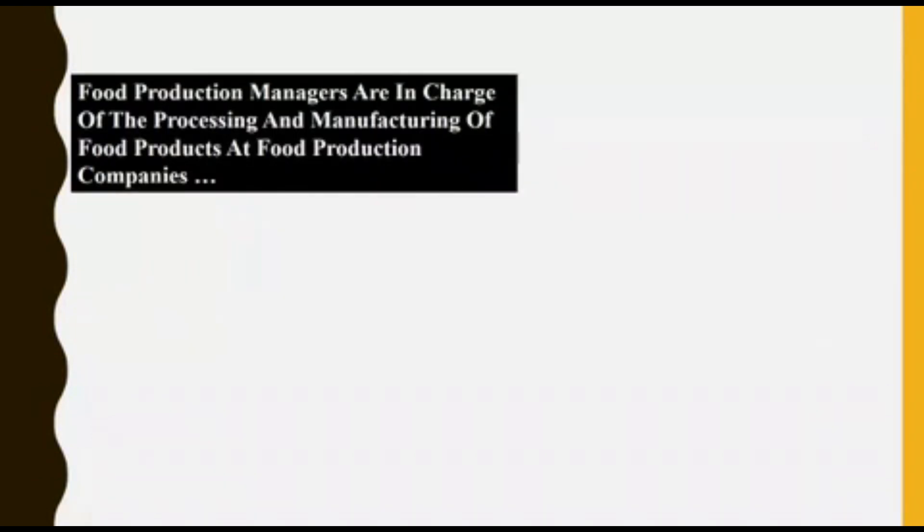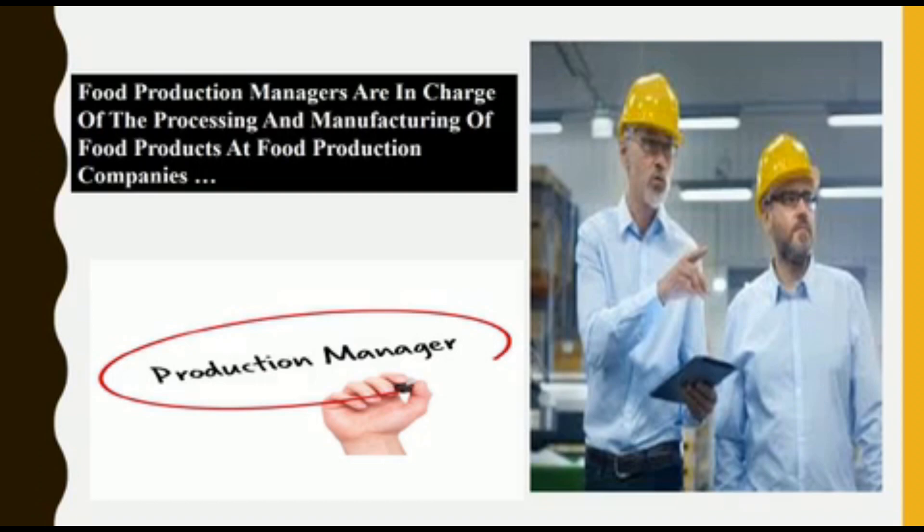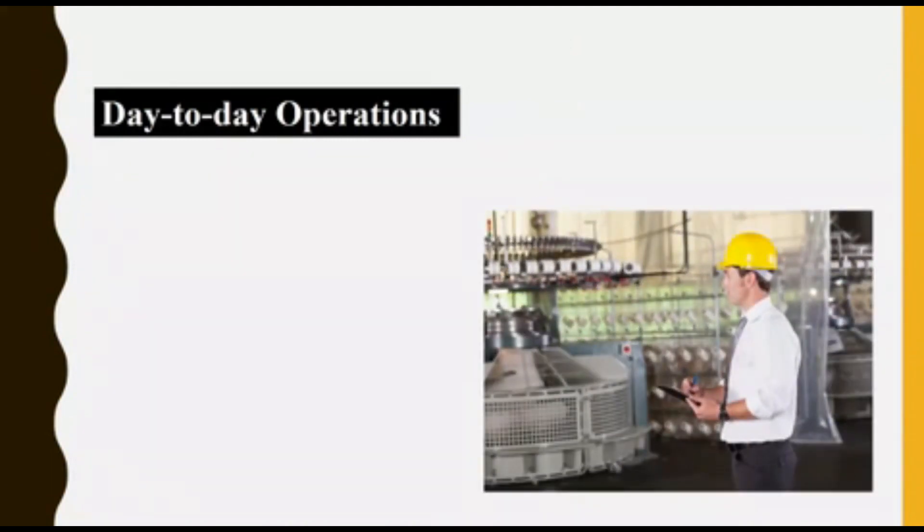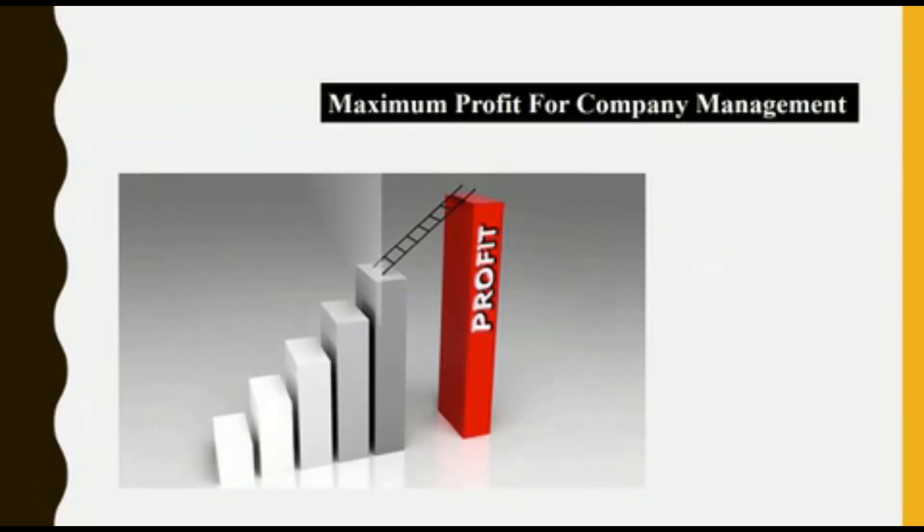Production: Another important scope where a food technologist can work is in food production, where he or she will be responsible for processing and manufacturing of food products. They are responsible for overseeing the day-to-day operations at food processing industries and to ensure optimal product quality and maximum productivity.